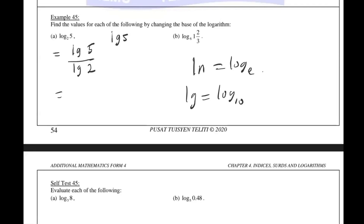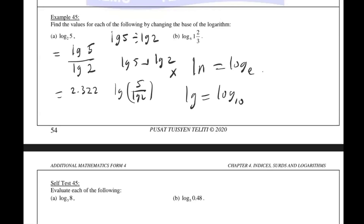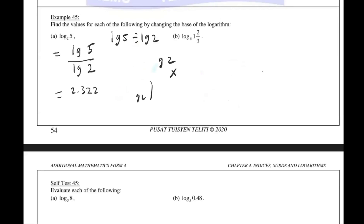Don't use the over/fraction button — especially for the gray calculator (the 570 MS). If you use the fraction button, the calculator will compute 5 divided by log 2, then take the log of that, giving a completely different answer. You must use the divide key. Otherwise your answer will be wrong.